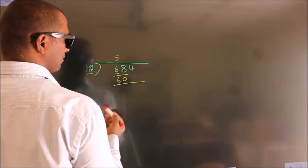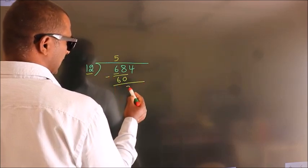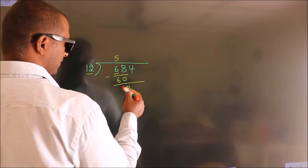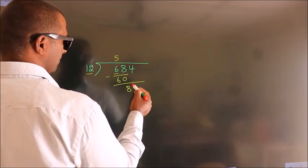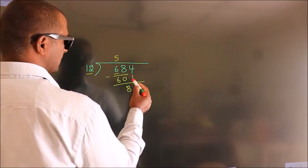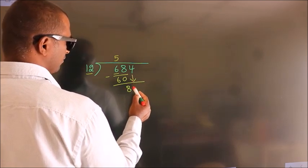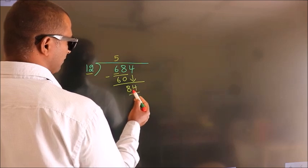Now we should subtract. We get 8. After this, bring down the beside number. So 4 comes down, giving us 84.